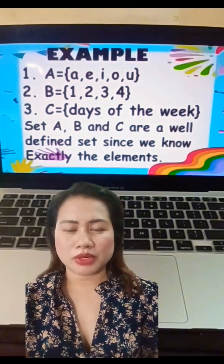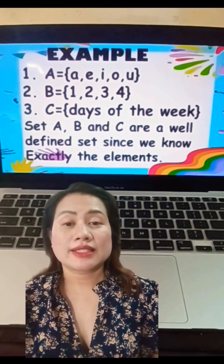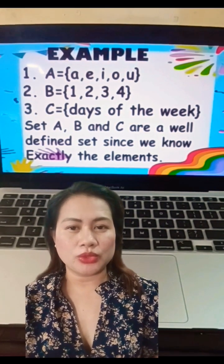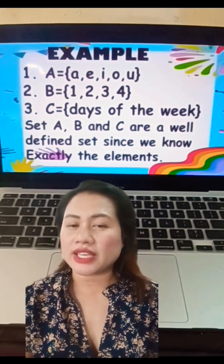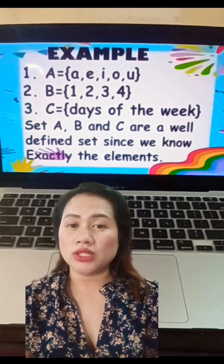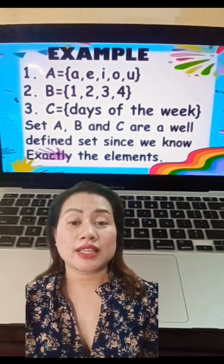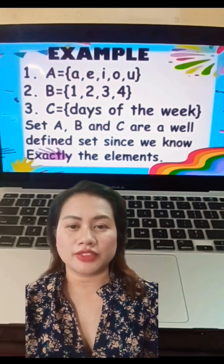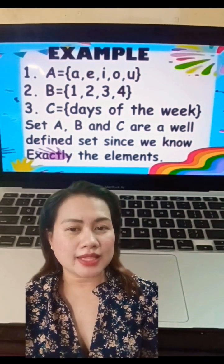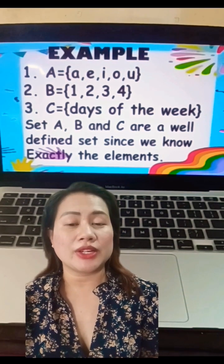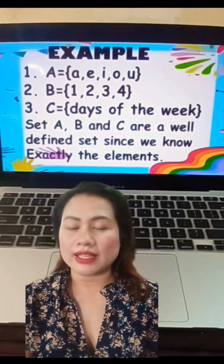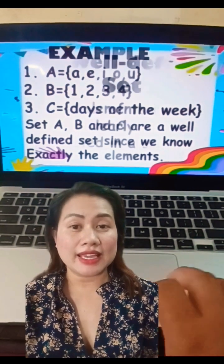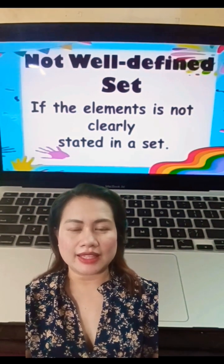Example number one: Set A whose elements are A, E, I, O, U. Number two: Set B whose elements are 1, 2, 3, 4. Set C whose elements are the days of the week. Set A, Set B, and Set C are known to be well-defined sets since we know exactly the elements in a given set.